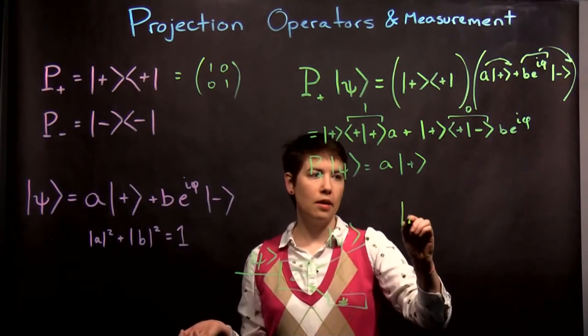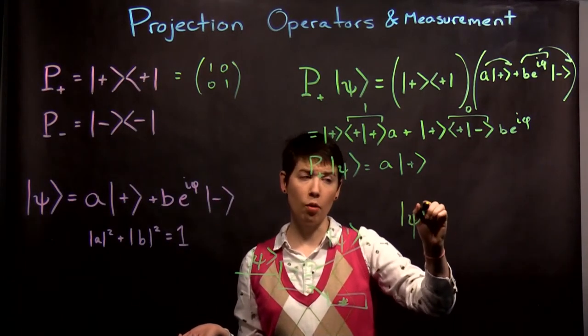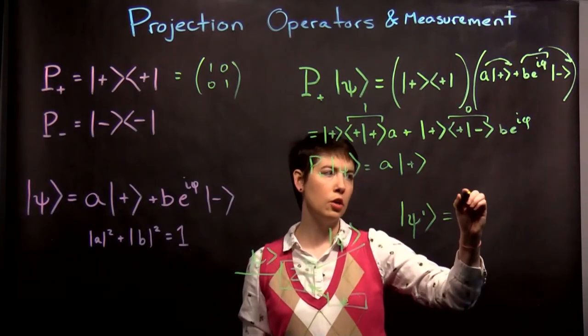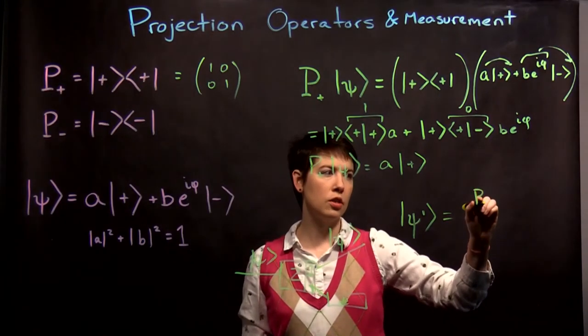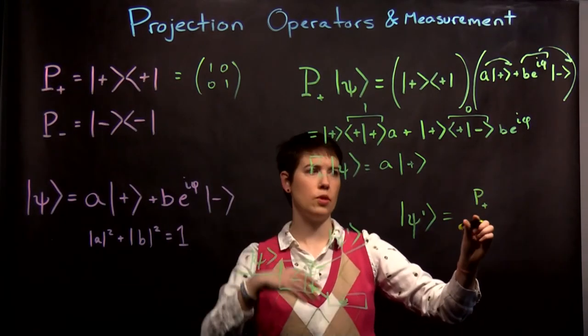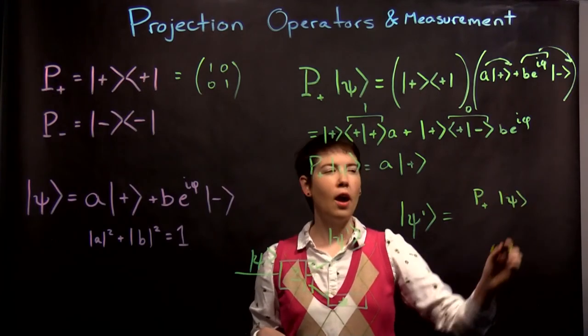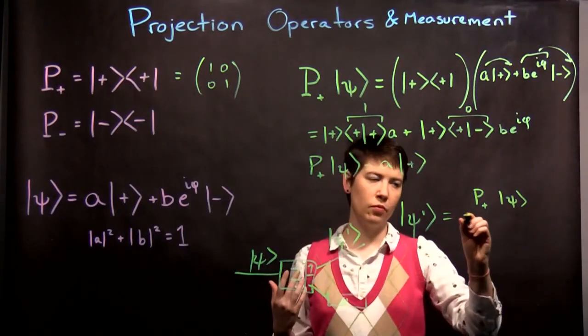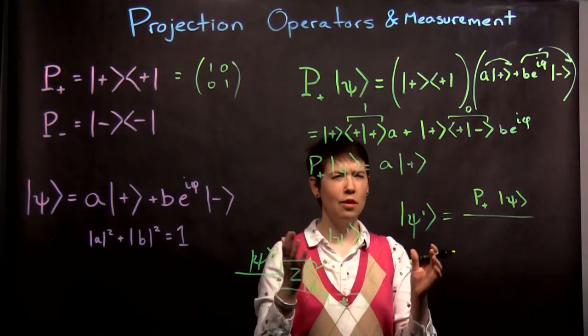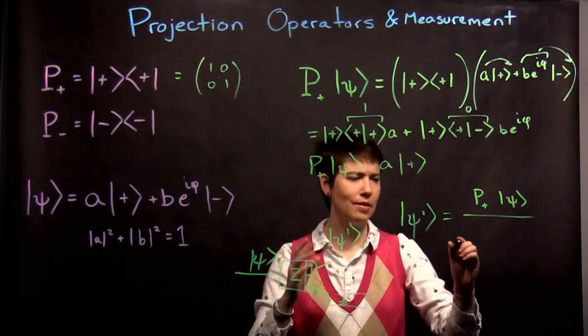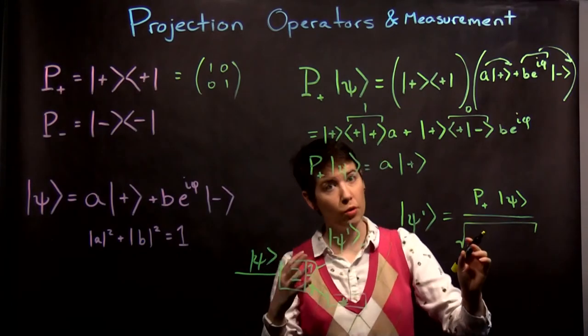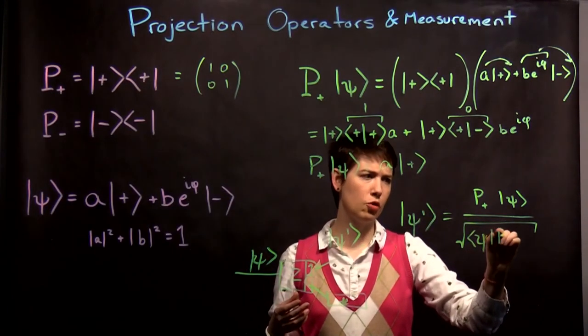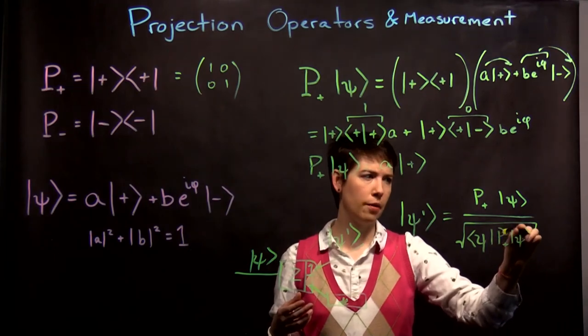And so we can say that psi prime is going to be equal to basically our normalized projection operator. So projection, in this case of spin up because that's the situation I had, psi. And then you just really have to renormalize it. And this is where it gets a little bit, the equation looks confusing. If you just have in your mind I have to renormalize this, it will work out. But it's the square root because that normalization is always kind of squaring. Psi projection operator psi.